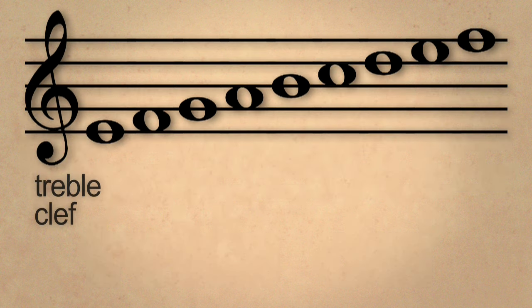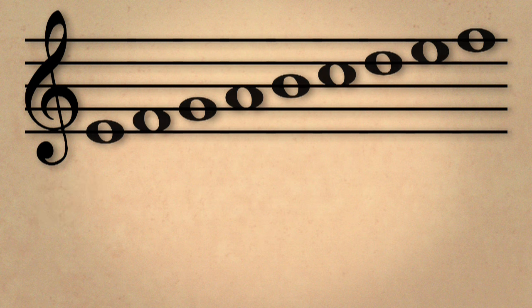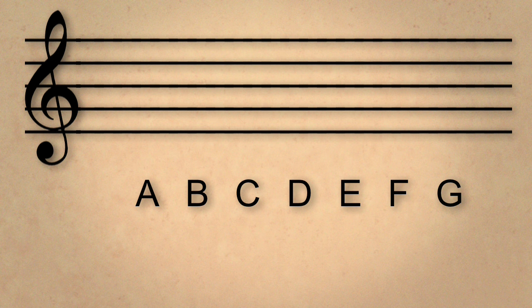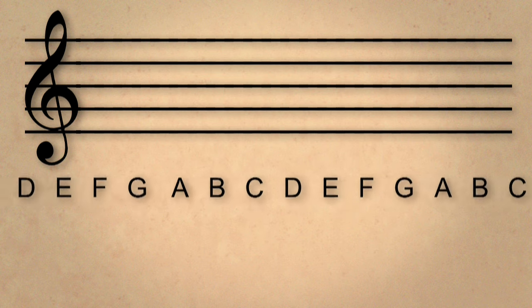Each note placed on the treble clef has a name corresponding to the first seven letters of the alphabet, starting with A and ending with G. These seven note names are repeated indefinitely.